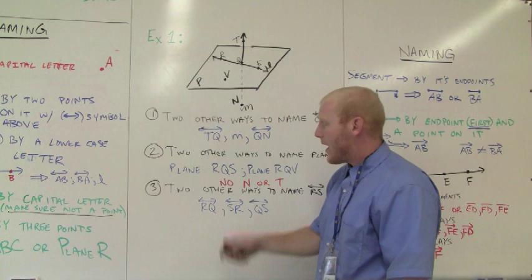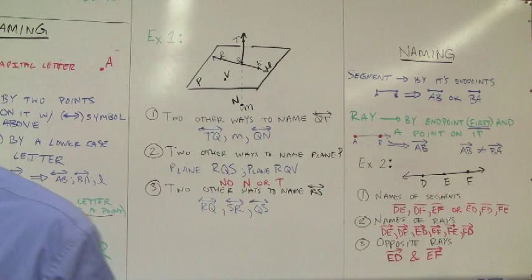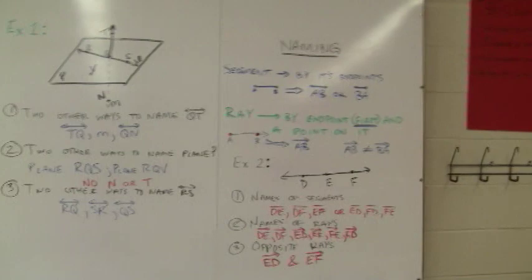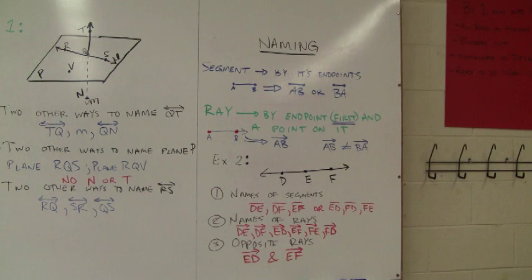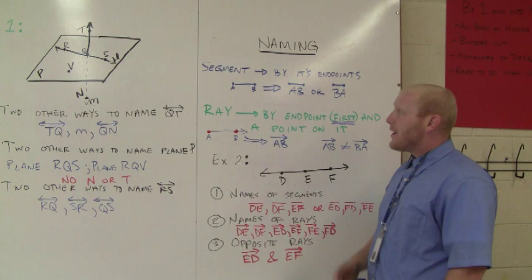So that's the example for how we named points, lines, and planes. Sorry about that confusion right there. Now we're finally going to name segments and rays.